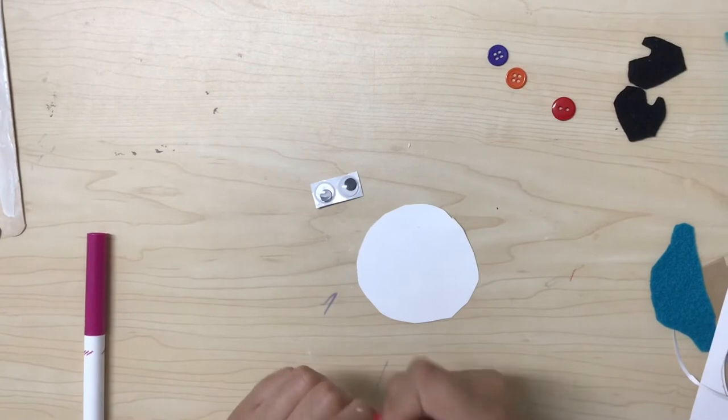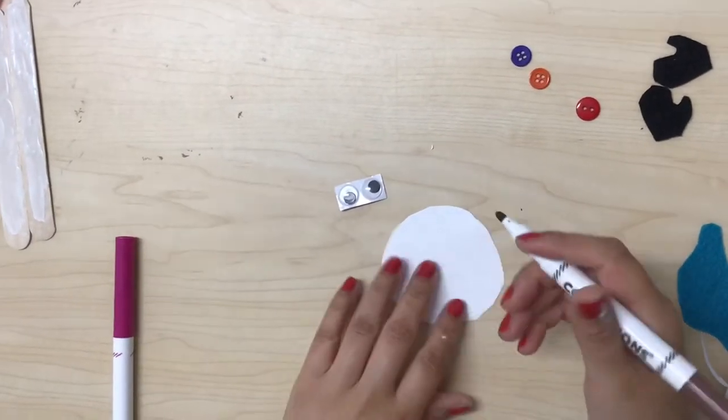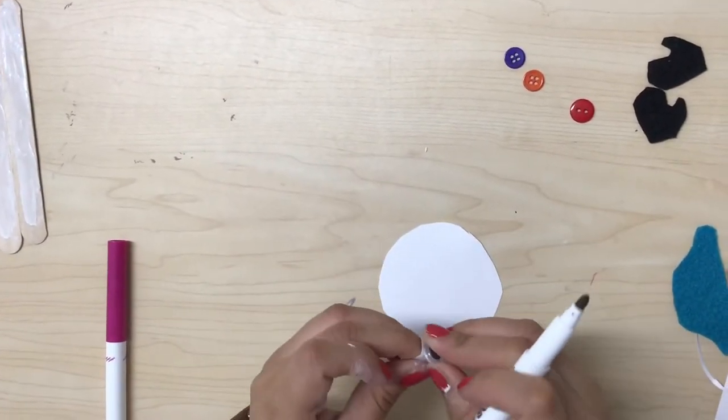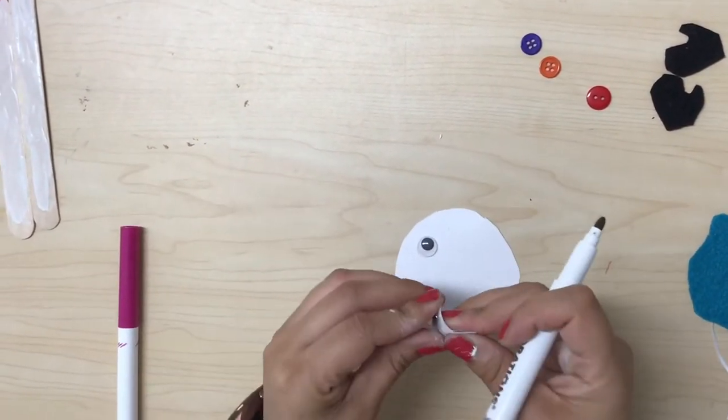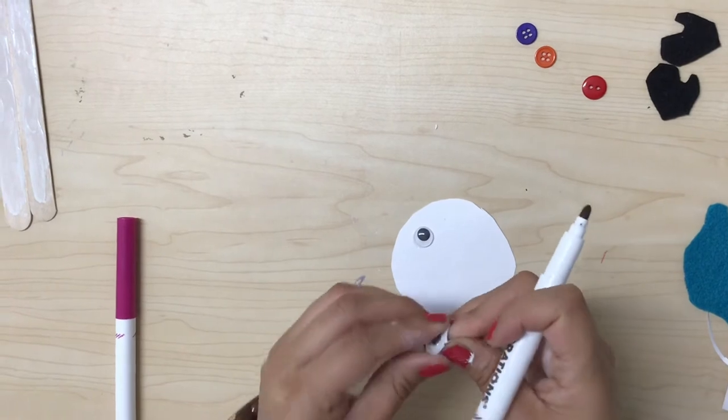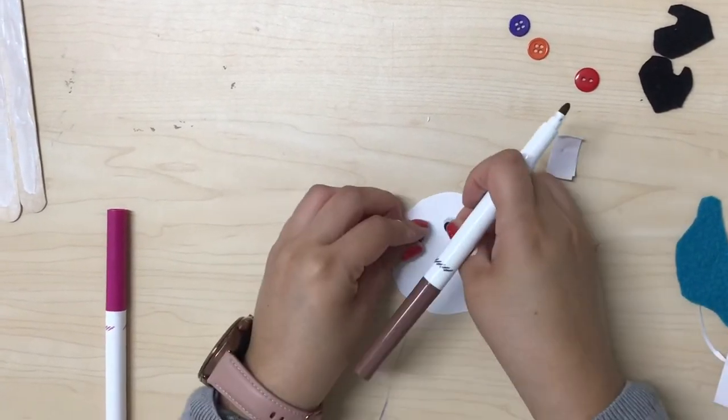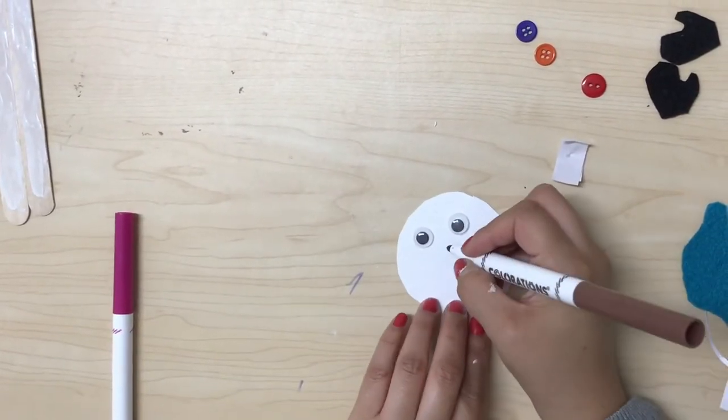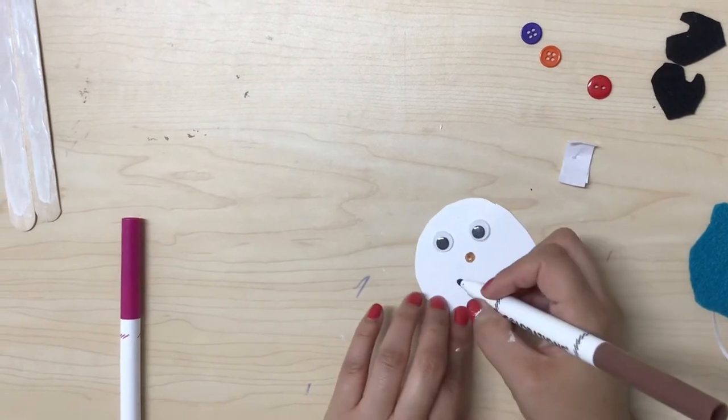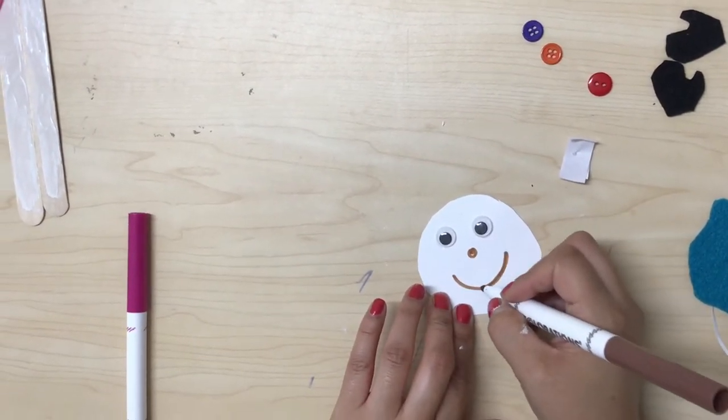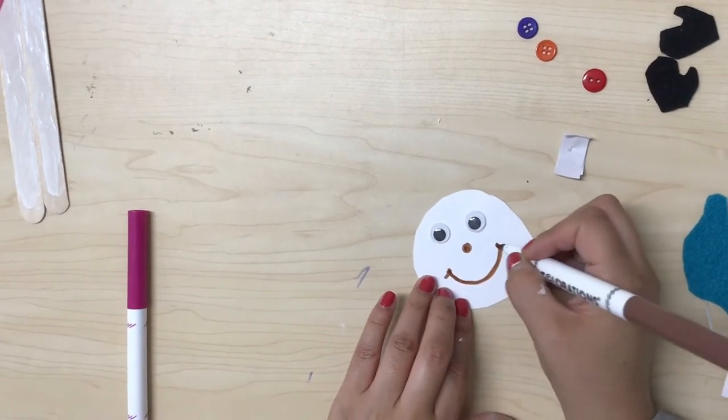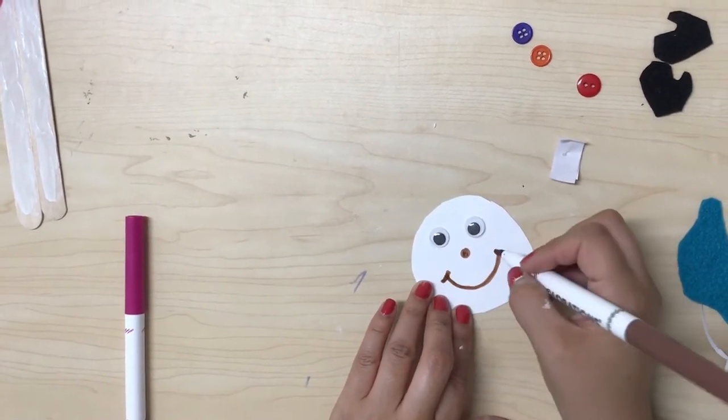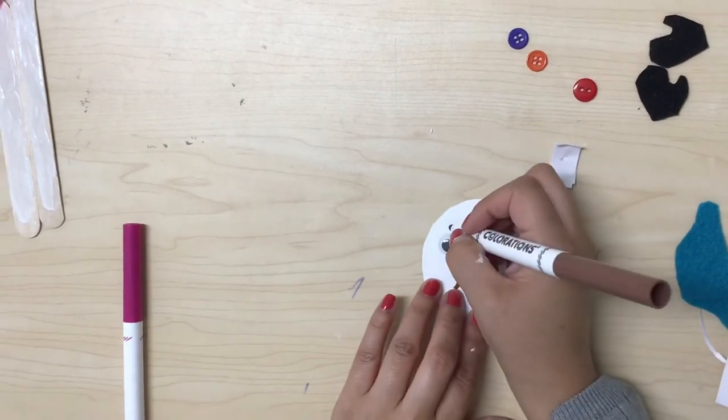Now, I am going to take my brown marker and I am going to put my wiggly eyes to the snowman. It will be the snowman face and I am going to draw a nose and a mouth. My snowman has a smile and some eyeballs.